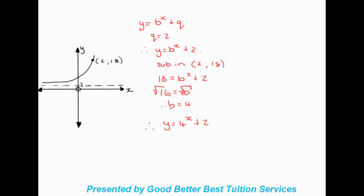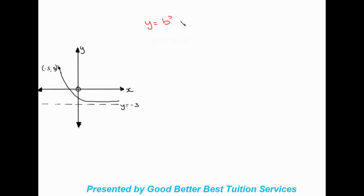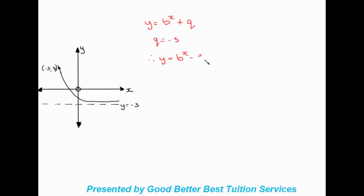Now let's look at another example. Once again we have an asymptote, so we write out y equals b to the power of x plus q. The asymptote given is y equals negative 3, which represents q. So q equals minus 3, and our new equation looks like y equals b to the power of x minus 3.